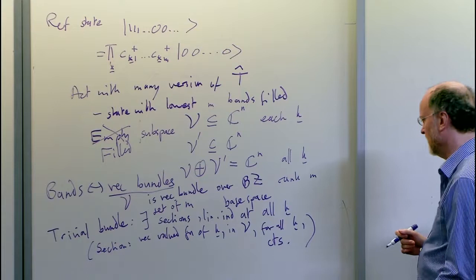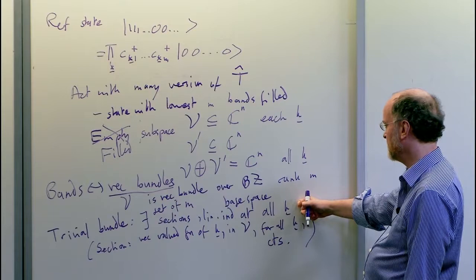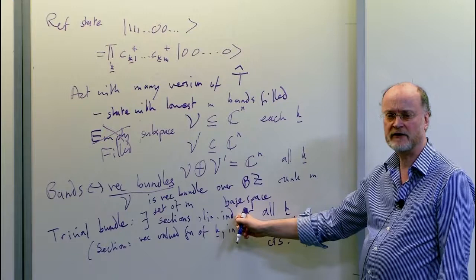The section doesn't have to be non-vanishing everywhere, but for a trivial bundle, linear independence at every k means they must not vanish anywhere. That's the topological definition of a trivial bundle, and I also want to mention the notion of 'analytic,' which has to do with the bundle V being embedded into ℂ^N at each k.